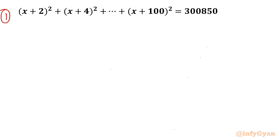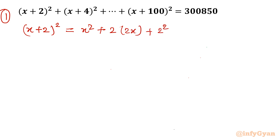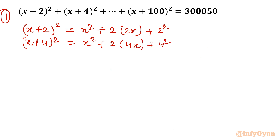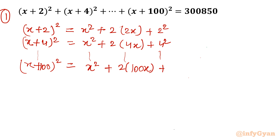Method number one: I will write the expansion of each bracket. So (x+2)² can be written as x² + 2(2x) + 2², using the a² + 2ab + b² formula. Similarly, (x+4)² = x² + 4(2x) + 4². Continuing in this manner, the last term (x+100)² = x² + 2(100x) + 100².